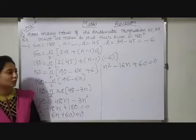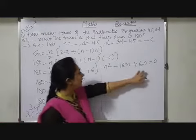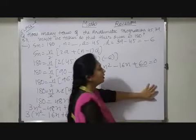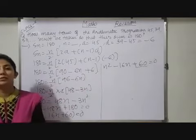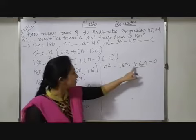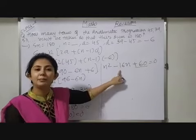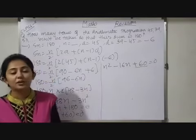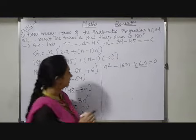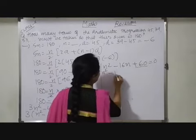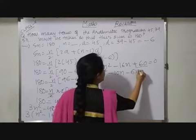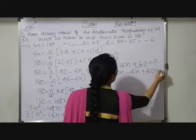Now we have to factorize this quadratic equation. So here last term is 60. So factors of 60 we have to form in such a way that sum of two numbers will be minus 16. So as we are knowing, 10 times 6 are 60. So N squared minus 10N minus 6N plus 60 equals to 0.